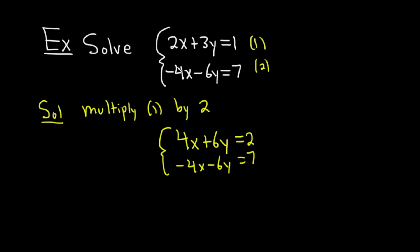And obviously, the reason we multiplied by 2 was so we can eliminate the negative 4x, because 4x plus negative 4x is 0. Now we add, just like before. Here we get 0 plus 0 equals 9. So we end up with 0 equals 9.